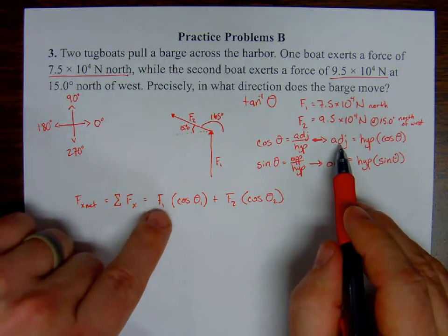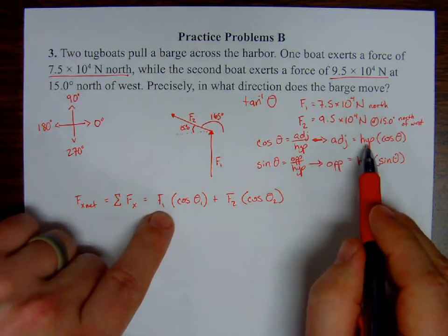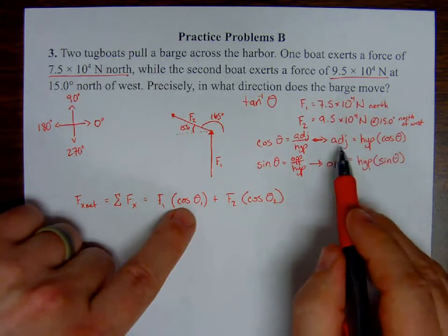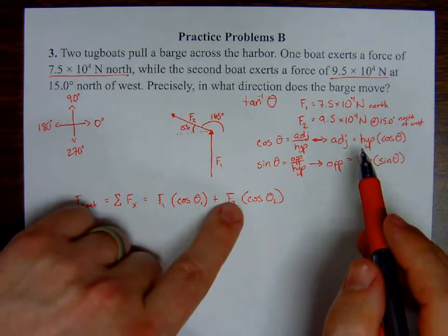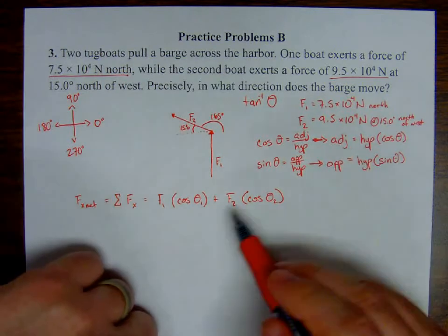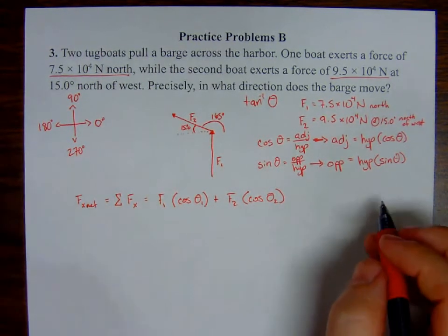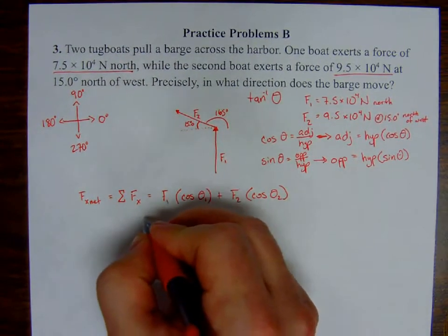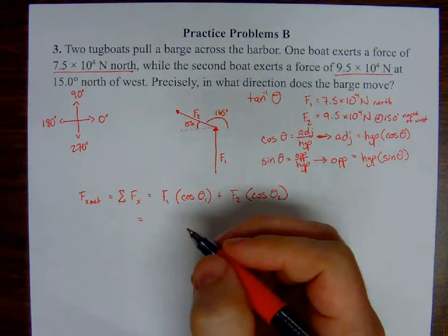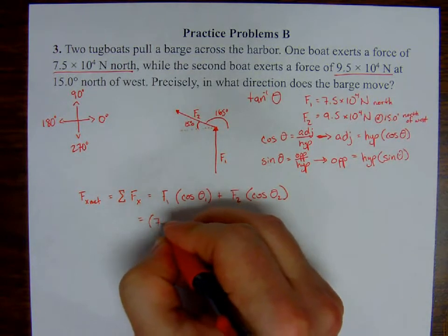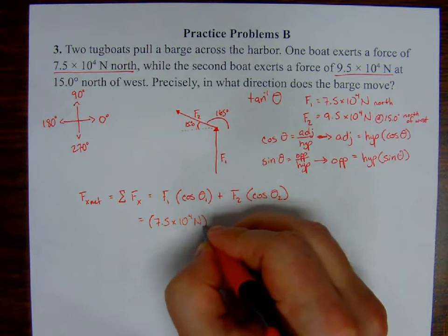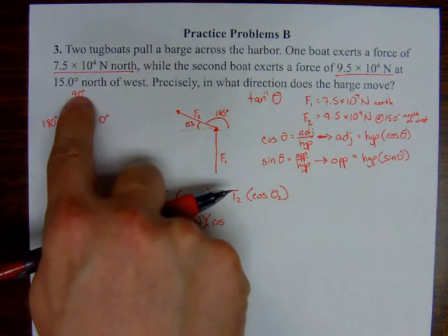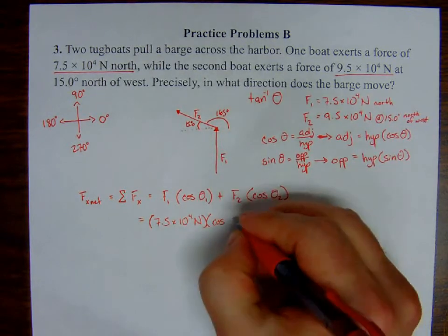When I do that, I'm going to start plugging in values. Okay, so f1: 7.5 times 10 to the 4th Newtons, multiplied by the cosine—again, straight up, right? North is 90 degrees, so it's going to be cosine of 90 degrees—plus f2, which is 9.5 times 10 to the 4th Newtons, multiplied by the cosine of 165 degrees. Again, this is the angle we're going to be using right here.